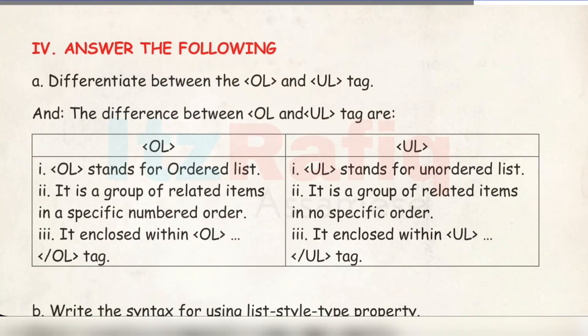Answer the following. Number A: Difference between OL and UL tag. OL stands for ordered list and UL stands for unordered list. OL is a group of related items in a specific numbered order, while UL is a group of related items in no specific order. OL items are enclosed within opening and closing ol tags; UL items are enclosed within opening and closing ul tags.